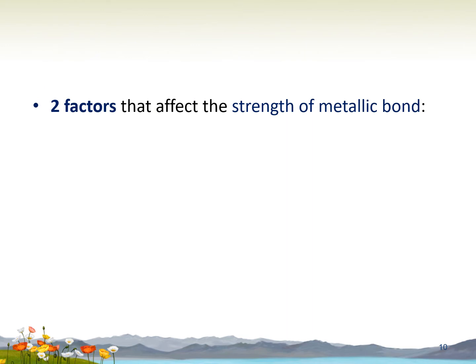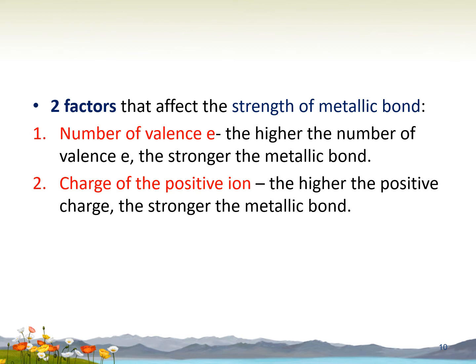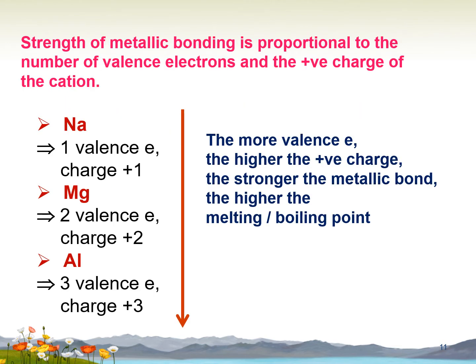There are two factors that affect the strength of the metallic bond. The first is the number of valence electrons — the higher the number, the stronger the metallic bond. The number of valence electrons also determines the charge of the positive ion, which is the second factor. From sodium to aluminium: sodium has one valence electron with a +1 charge, magnesium has two valence electrons with a +2 charge, and aluminium has three valence electrons with a +3 charge. Therefore, aluminium has the strongest metallic bond and the highest melting and boiling point.